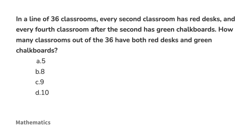In a line of 36 classrooms, every second classroom has red desks, and every fourth classroom after the second has green chalkboards. How many classrooms out of the 36 have both red desks and green chalkboards? Take a moment and see if you can find the answer.